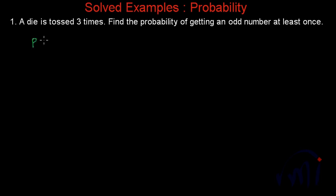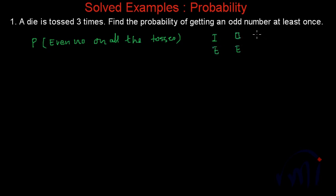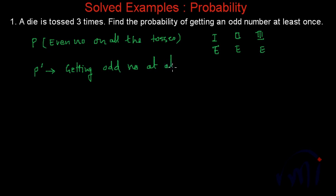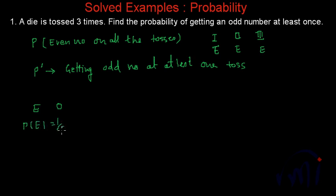If we find the probability of getting an even number on all the tosses — that means die one shows an even number, the second die also shows an even number, and the third die also shows an even number — then p-dash will give us the probability of getting an odd number at least once. When we toss a die, we can get either an even or an odd number. The probability of getting an even number is one-half and the probability of getting an odd number is also one-half.